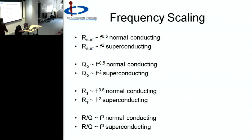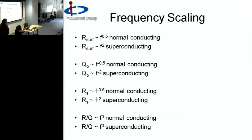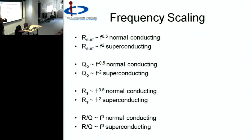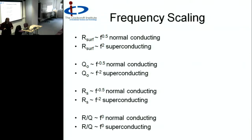All cavity parameters have frequency dependences. Surface resistance scales as √f for normal conducting systems or f² for superconducting systems. The f² dependence is problematic for superconducting cavities - above about 3 GHz the losses become too high. For normal conducting systems lower frequencies are better for Q and shunt impedance, though other factors complicate this. Q factor scales inversely with surface resistance, as does shunt impedance. R/Q has no frequency dependence, which is another reason it's a handy parameter.